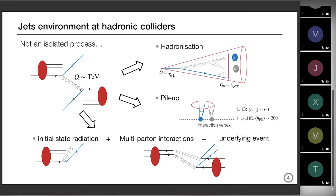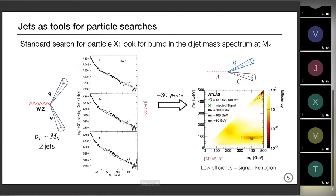Another contribution is initial state radiation — partons that enter the collision can radiate before entering, in the same way they do after. Finally, multiparton interactions account for the fact that not only can one parton from each proton interact, but we can have multiple interactions. In your jet cone you end up with particles coming from different parton interactions. These last two things together will be called underlying event for the rest of the talk, so I study separately: hadronization, pileup, and the underlying event.